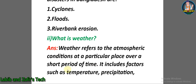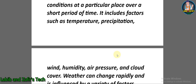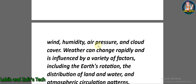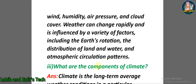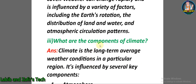Short question number two: What is weather? Answer: Weather refers to the atmospheric conditions at a particular place over a short period of time. It includes factors such as temperature, precipitation, wind, humidity, air pressure, and cloud cover. Weather can change rapidly and is influenced by a variety of factors including the Earth's rotation, the distribution of land and water, and atmospheric circulation patterns.